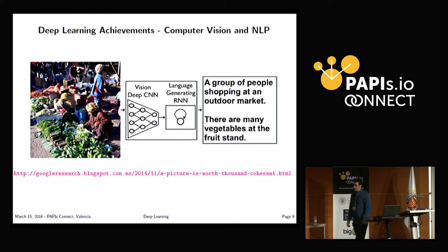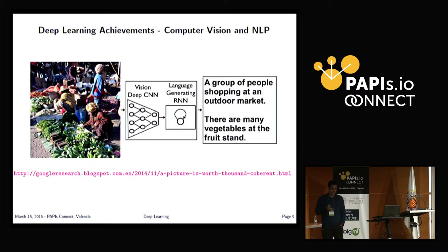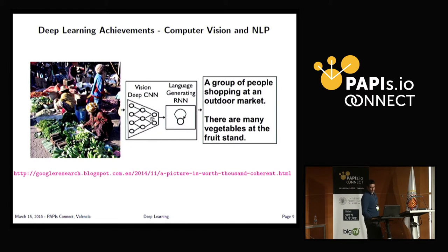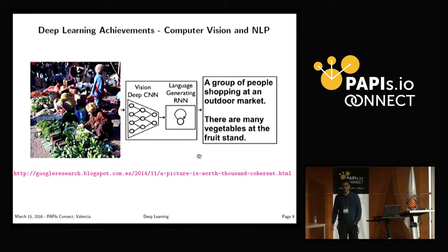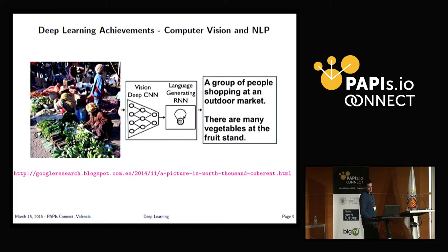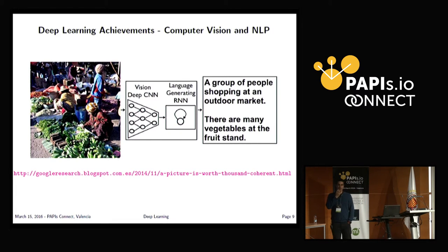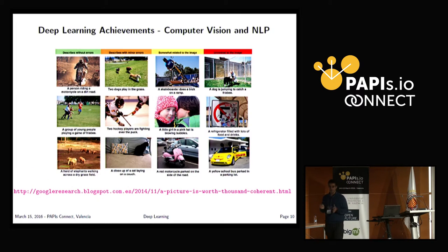Here you can see an example of an image and what we can do: we can get not only a classification of objects in the image but also a natural language description. To obtain this, we apply a deep convolutional network to the image, which gives thousands of posterior probabilities of objects belonging to the image. Then we use a recurrent neural network implementing a language model to generate a natural description of the image. Of course, I can show examples where it works perfectly and some where it doesn't.